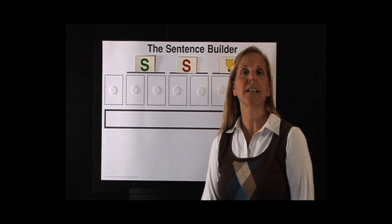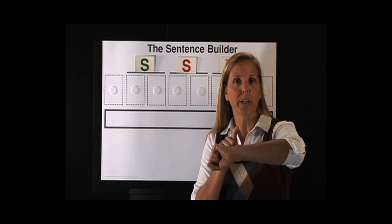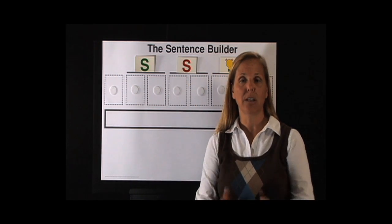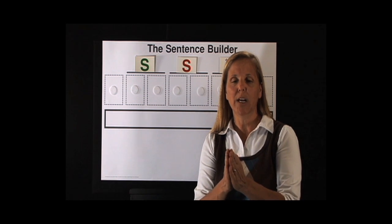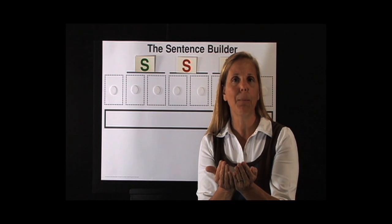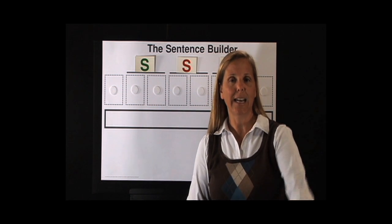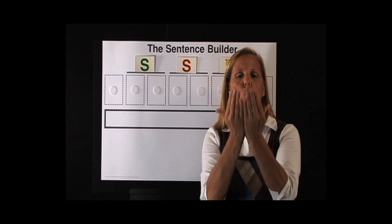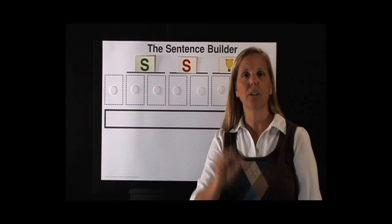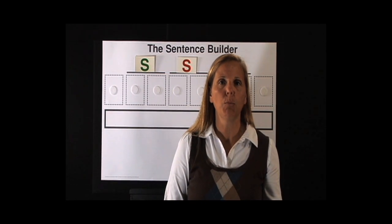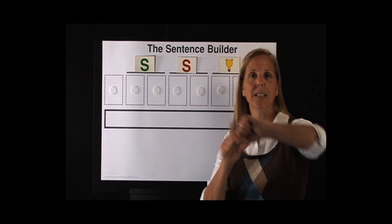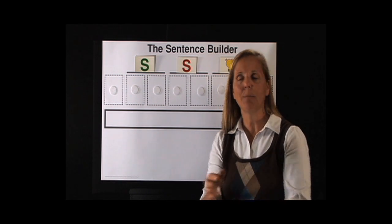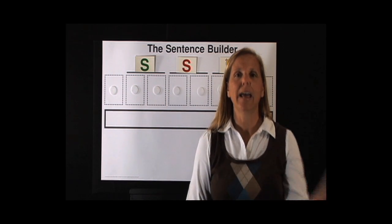The first S is green and that's for setting. Setting tells us when or where — we always point to our wrists like we're looking at a watch. The second S is subject: who or what is the information about, like opening up a book. The light bulb has two parts: what's the big idea and why is it so important. So we have setting — when and where; subject — who or what the information is about; and the light bulb — the big idea and why it's so important.